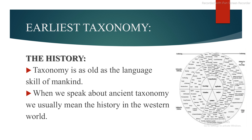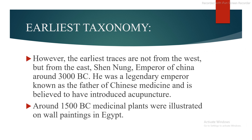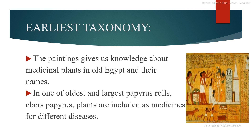Now I am going to discuss about the earliest taxonomy history. Taxonomy is as old as the language skill of mankind. When we speak about ancient taxonomy, we usually mean the history in the western world. However, the earliest traces are not from the west but from the east. Shen Nong, Emperor of China, around 3000 before Christ, was a legendary emperor known as the father of Chinese medicine and is believed to have introduced acupuncture. Around 1500 before Christ, medicinal plants were illustrated on wall paintings in Egypt. In one of the oldest and largest papyrus roles, the Ebers Papyrus, plants are included as medicines for different diseases.